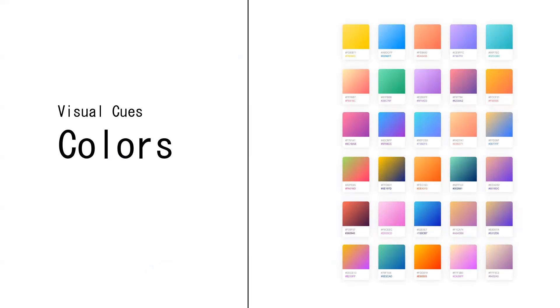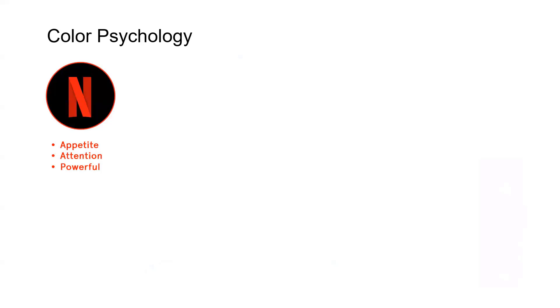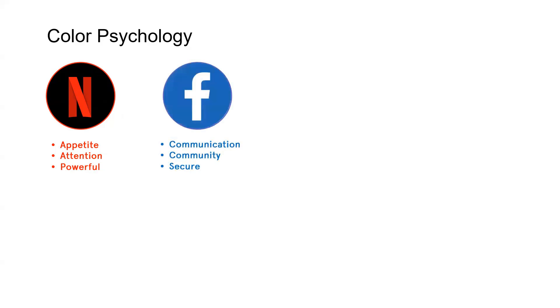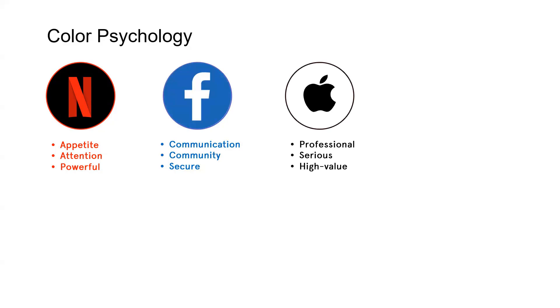Let's talk about visual cues — specifically colors and how to choose them. Some psychology relating to colors: red reminds us of appetite, attention, and power. Netflix uses red in their logo to fulfill their users' appetite for multimedia. Blue, used by Facebook, illustrates a sense of community and security. Apple mainly deploys black to exhibit professionalism and signal that their products are of high value and that what they do is of serious matter.